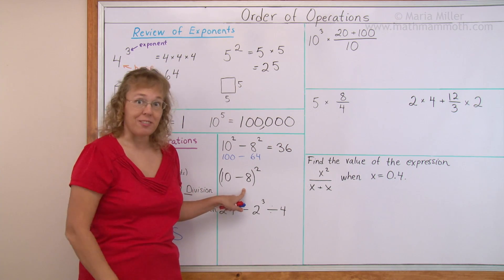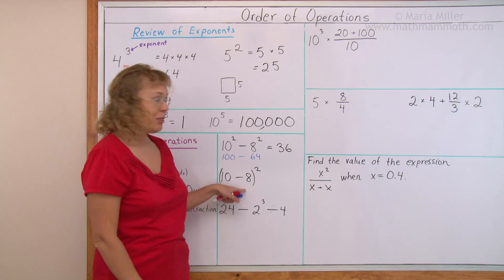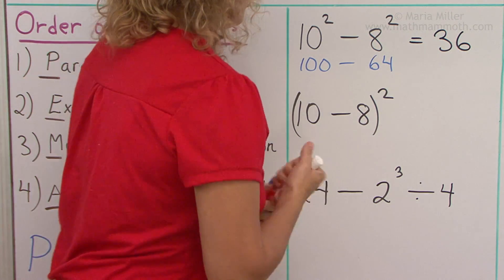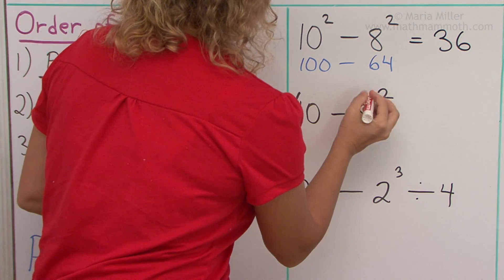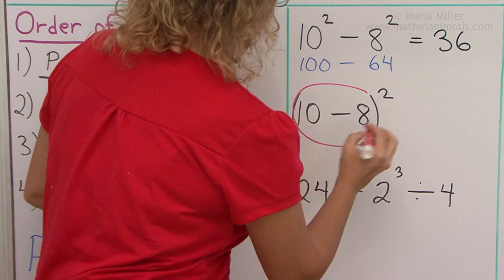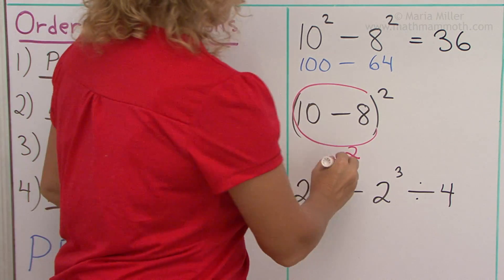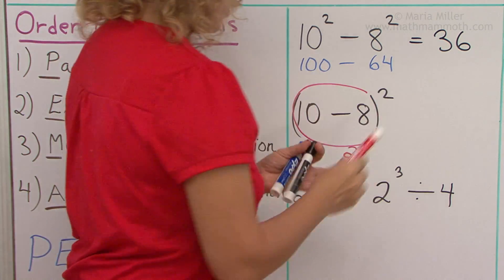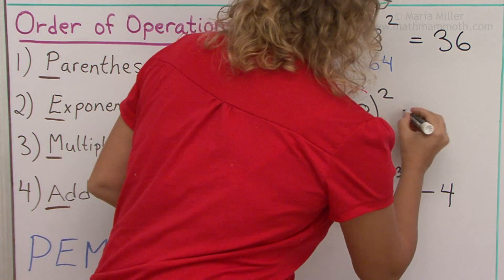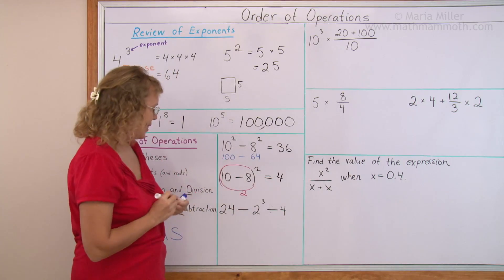This next one is almost the same thing, but now we have parentheses. So we need to solve inside the parentheses first — that gives us 2. Then we have 2 squared, which means 2 times 2, equals 4. Those were easy.